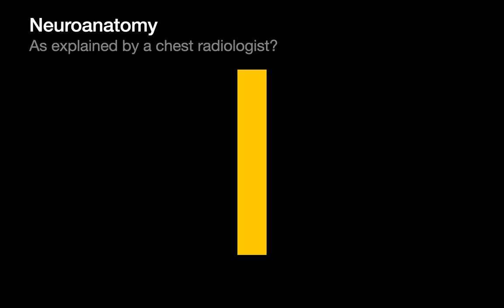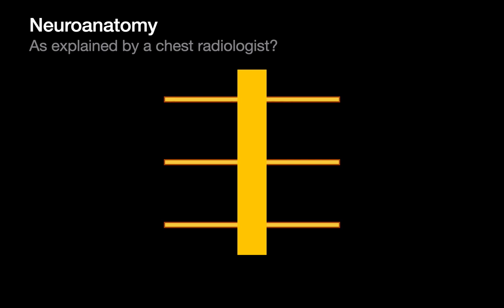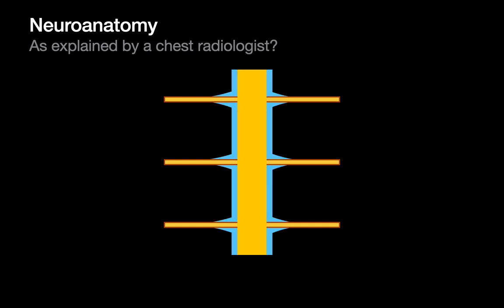As a chest radiologist, my approach to neuroanatomy is quite basic. There's the spinal cord. Spinal nerves come off the spinal cord at every vertebral level, and each spinal nerve is enveloped by a nerve sheath. The spinal cord and the roots of the spinal nerves are enveloped by a CSF-filled thecal sac, and we have sympathetic chains running parallel to the spinal cord on both sides.